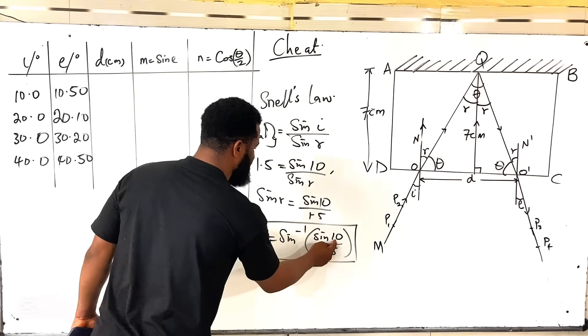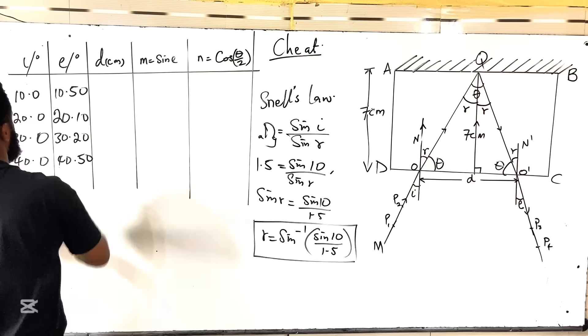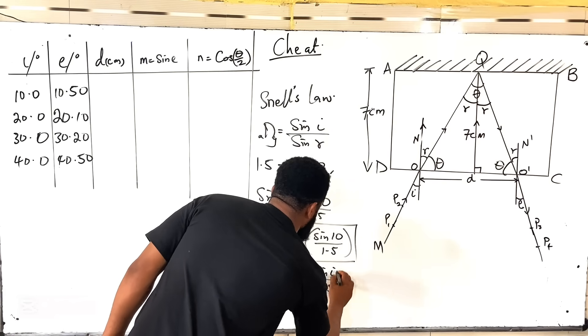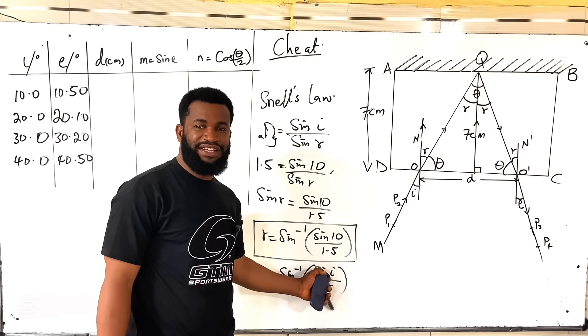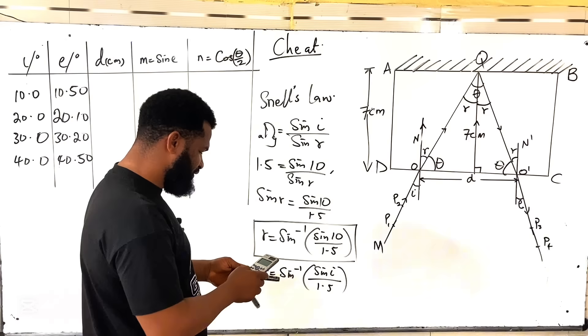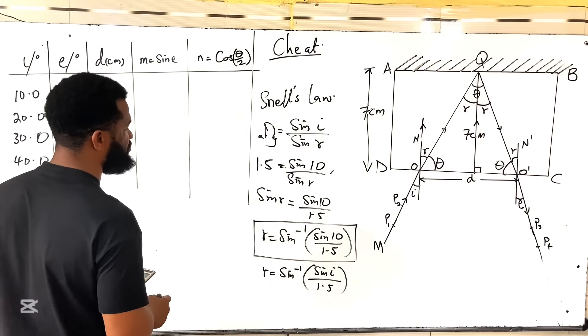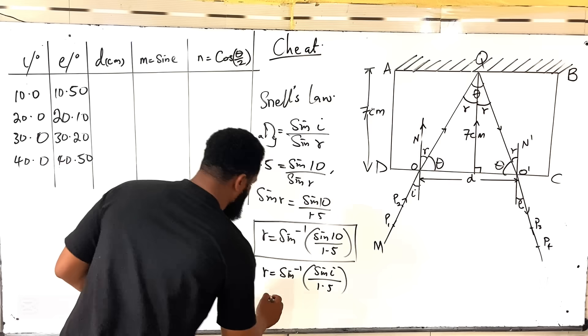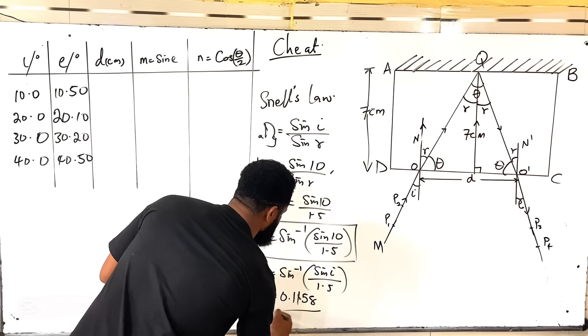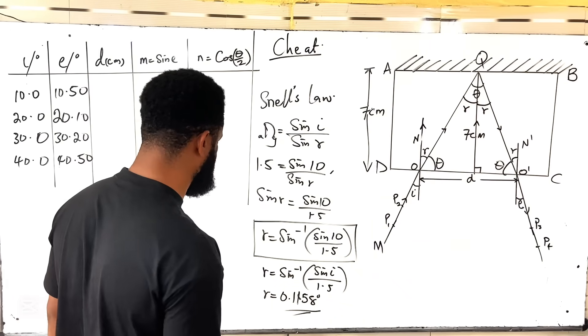When light is passing from air to glass, it is 1.5. So I is already giving us this. I'm going to have sin 10 over sin R. So sin R is going to be sin 10 over 1.5. Simply put, R is equal to sin inverse of sin 10 over 1.5. This is the first formula you need. For every 10, the next one, you remove this 10, put 20 for the 20, 30 for this side. So R is sin inverse of sin I over 1.5. The value for R, I have gotten my R to be 0.1158 degrees.